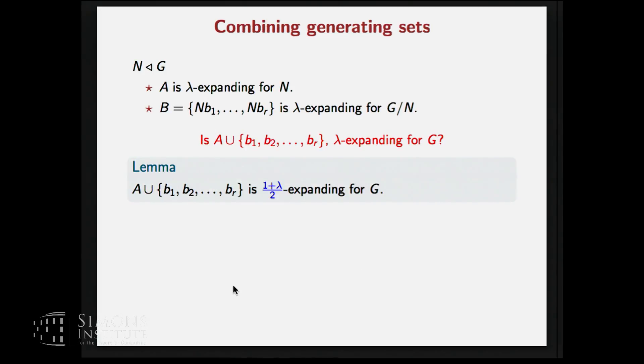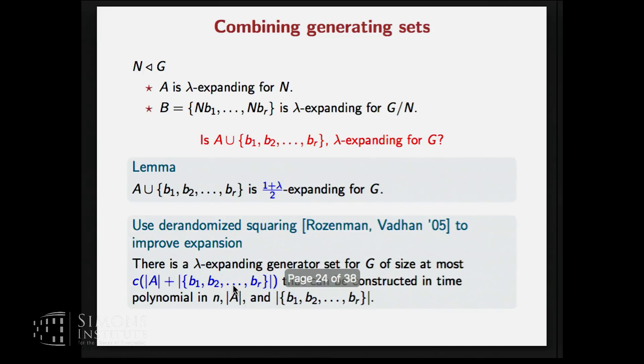The answer is both yes and no. Because although this is an expanding generating set, the expansion is not as good. So from lambda here, we go to (1+lambda)/2. So it deteriorates the expansion. And this is not good because if we repeatedly apply this procedure, then we will keep on losing on the expansion. And finally, we won't have a good expander.